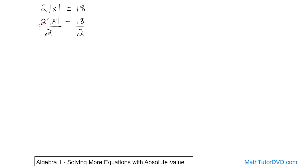So effectively, everything basically disappears there, and on the left-hand side you still have the absolute value of x, and on the right-hand side you have 18 divided by 2, which is 9.